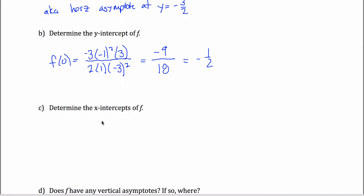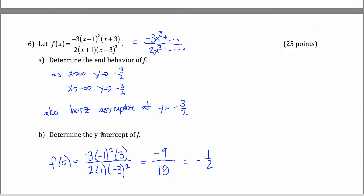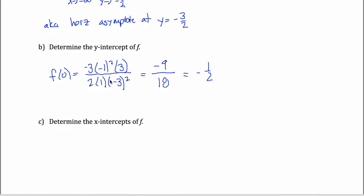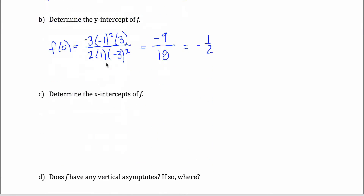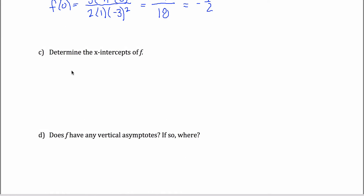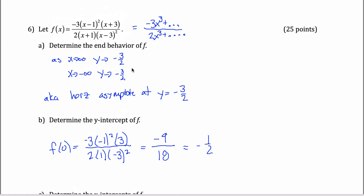To find the x-intercepts, I need to figure out what values of x make the numerator equal to 0 but do not make the denominator equal to 0. Positive 1 will make the top equal 0, and negative 3 will make the top equal 0, and neither of those will make the bottom equal 0. So the x-intercepts occur at x equals 1 and x equals negative 3.